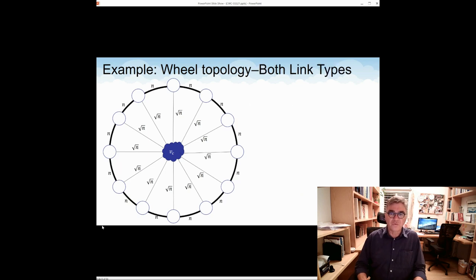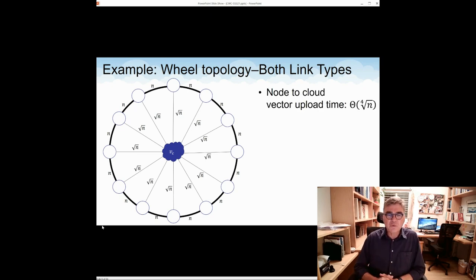But what happens if we use both the ring links and the cloud links? Well, in this case, things look much better. We can show that the time to upload a single n bit vector from a node to the cloud is theta of the fourth root of n. If a node tries to do it alone, it's a square root of n. But with help from friends, it can be done in the fourth root of n. And actually, this is also a lower bound up to a constant. So using this technique of uploading a vector in the fourth root of n times, we can compute the sum of all vectors in time, which is soft theta of the fourth root of n, namely n to the one quarter times some polylog.